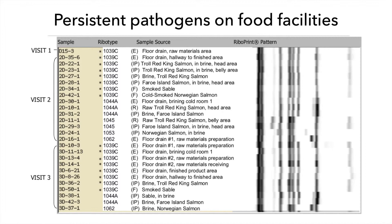For example, this table shows the results of a study conducted in a smoked seafood facility that was visited multiple times, with six weeks in between each visit. Samples taken were analyzed with DNA fingerprinting, and they found the same listeria strain — 1039C, marked with a star — in drains in all three visits, and in finished products in the last two visits.